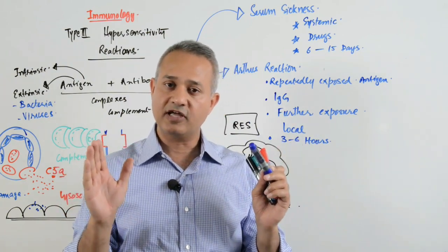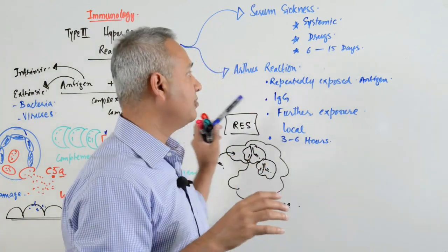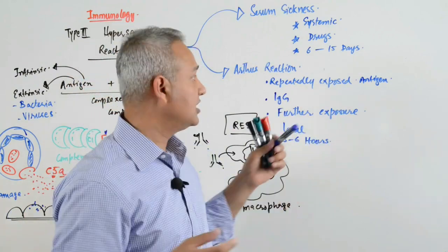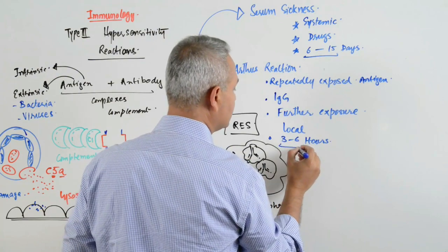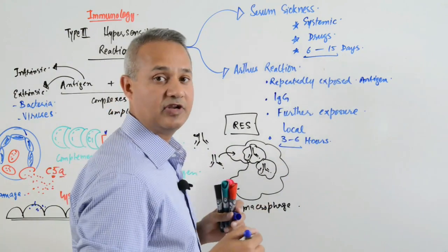Once the antibodies develop, only then the antigen-antibody complexes will form. Only then the complement activation would occur and systemic issue would occur. Serum sickness, this is your key when you are looking at the USMLE questions: did it occur within 3 to 6 hours or did it occur within 6 to 15 days?